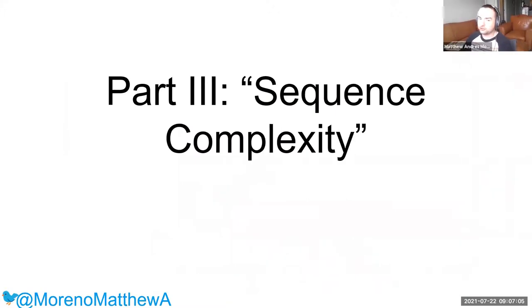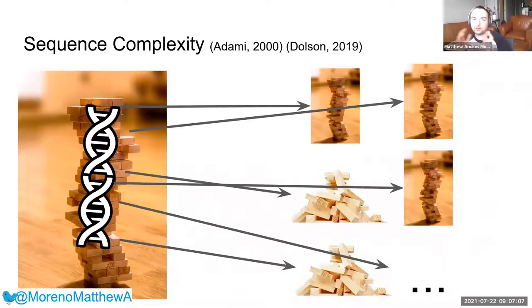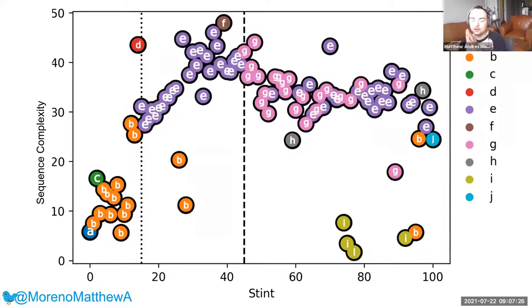We also looked at measures of complexity. We took a sequence complexity measure after the Modus toolbox. The idea of being trying to count up how many sites in a genome are critical to fitness. If you think of a genome like a Jenga tower, we're looking to see how many blocks, when you pull a single block out, it causes the tower to collapse, trying to figure out how many sites are actually doing something functionally.